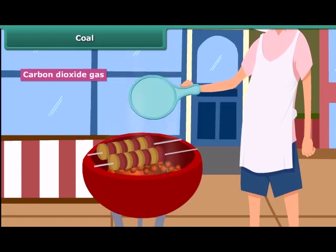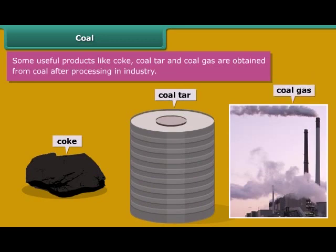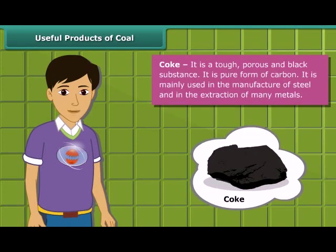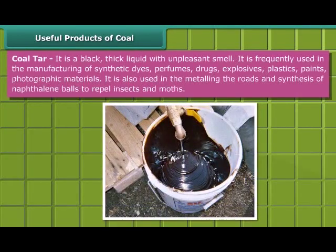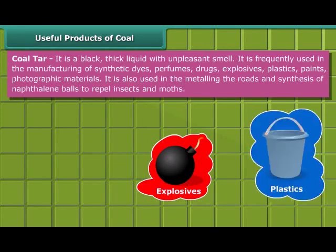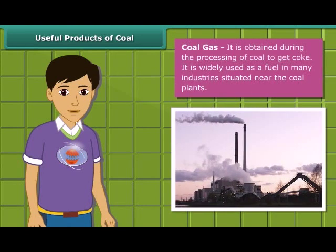Some useful by-products of coal — coke, coal tar, and coal gas — are obtained directly from coal. Coke is a tough, porous, and black colored substance mainly used in the manufacturing of steel and extraction of many metals. Coal tar is a black, thick liquid with an unpleasant smell, frequently used for manufacturing synthetic dyes, perfumes, drugs, explosives, paints, plastics, and photographic materials. Coal gas is produced when obtaining coke from coal and is used as a fuel in many industries located near coal plants.